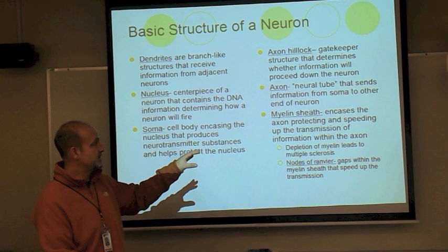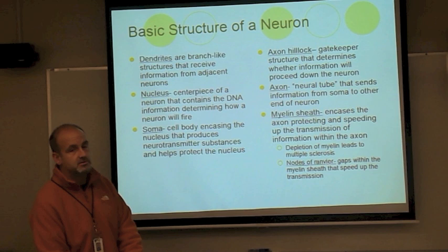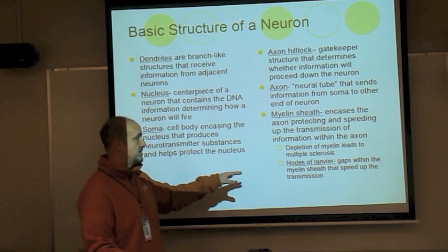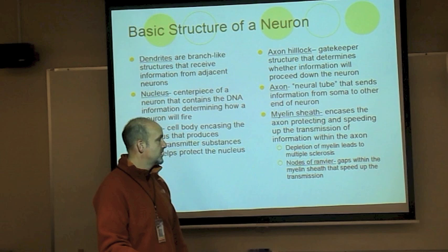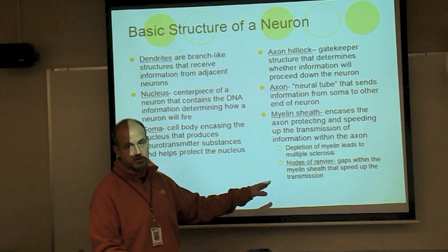The myelin sheath encases the axon — it protects and speeds up transmission within the axon. The key thing to remember, and you often see this on tests, is that depletion of myelin sheath is what leads to multiple sclerosis, which affects people in terms of their movement as well as their cognition. The nodes of Ranvier are gaps within the myelin sheath that speed up transmission.